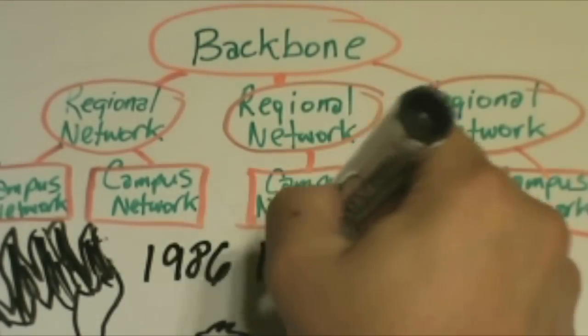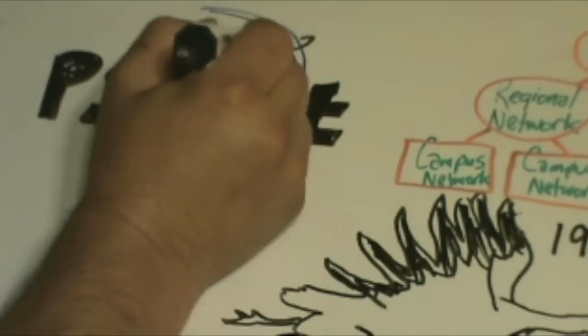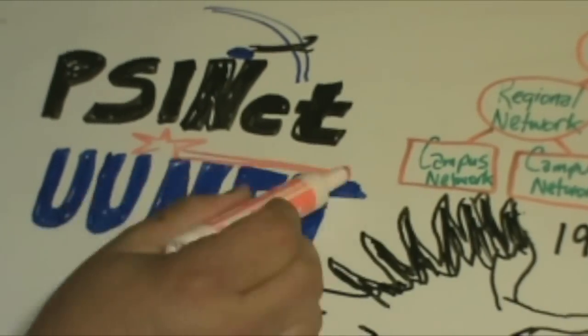During the late 1980s, the first Internet service provider companies were formed. Companies like PSINET and UUNET were formed to provide service to the regional research networks and provide alternate network access to the public.